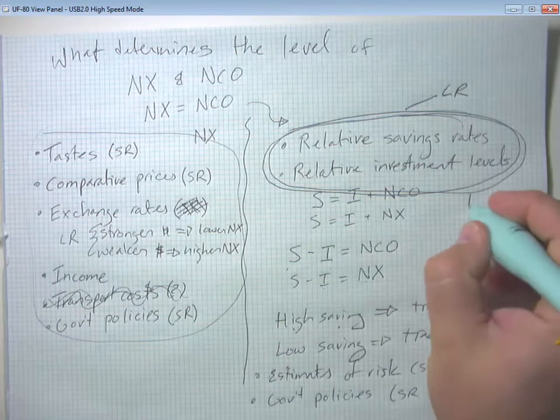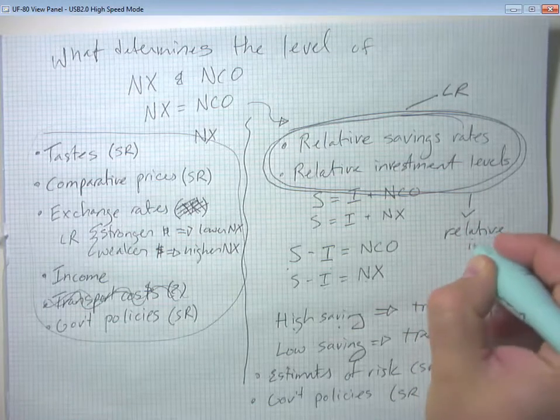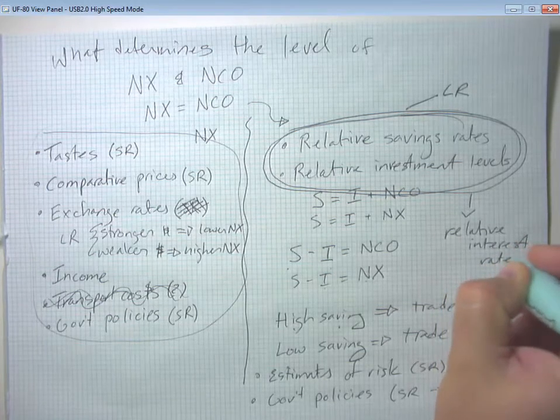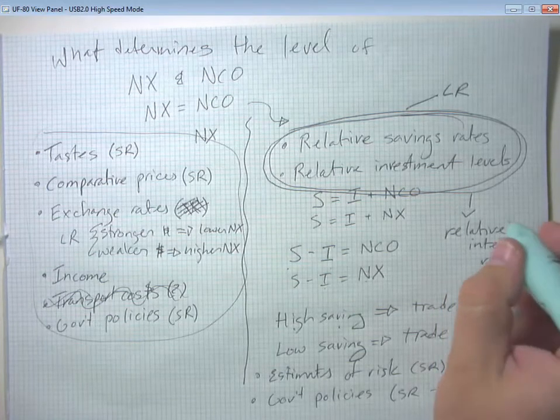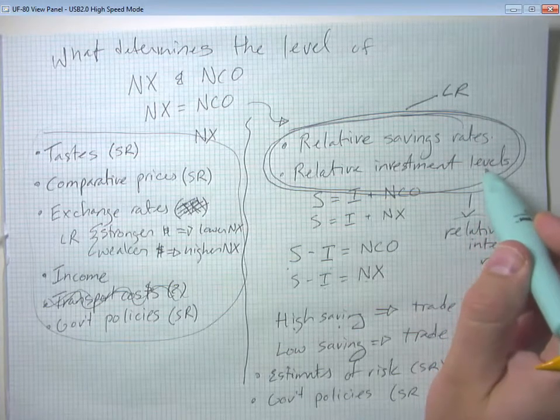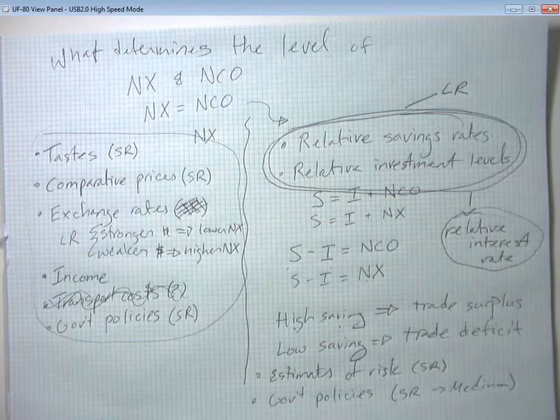And we could, as a corollary of that, look at relative interest rates. Because if you think back to something like a loanable funds model, savings relative to investment is going to tell you something about the supply of loanable funds relative to the demand for loanable funds. So that's going to tell you something about relative interest rates.